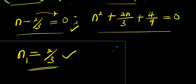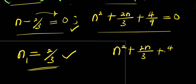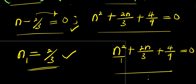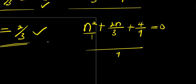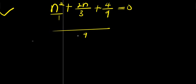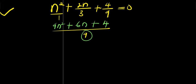To solve the quadratic n² + 2n/3 + 4/9 equals 0, the LCM is 9. Multiplying through: 9n² plus 6n plus 4 equals 0.